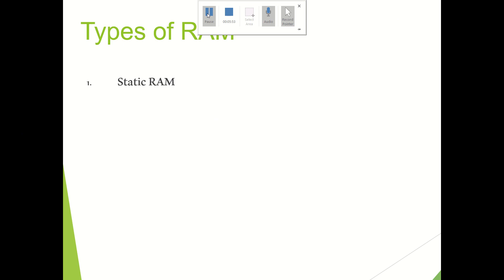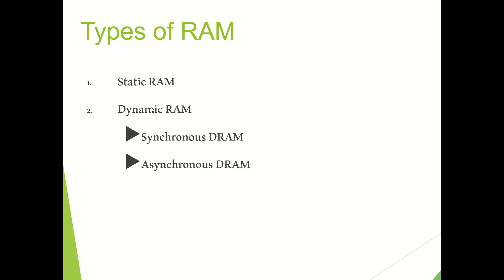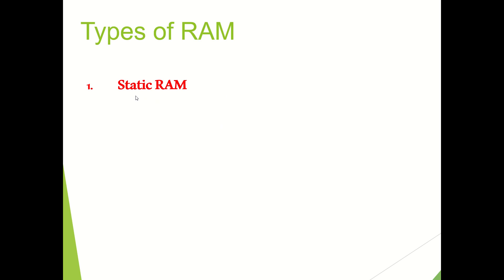So far we discussed about RAM — introduction to RAM and some problems related to RAM, how the RAM cell is arranged. Now we want to study in detail about the types of RAM. There are mainly 2 types: the first is called static RAM, also called SRAM, and the second is called dynamic RAM, called DRAM. Dynamic RAM is further divided into synchronous DRAM (SDRAM) and asynchronous DRAM (ADRAM). We will first discuss static RAM.